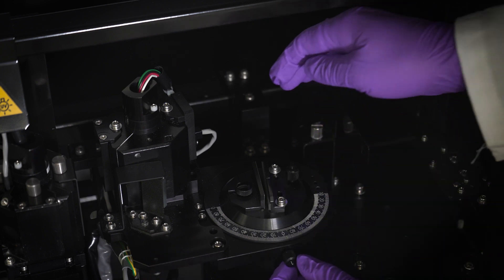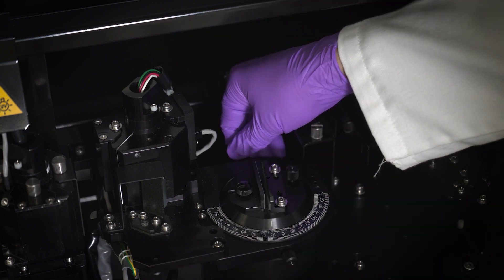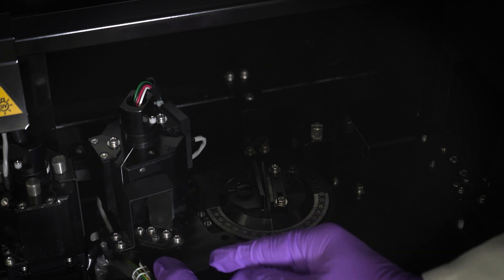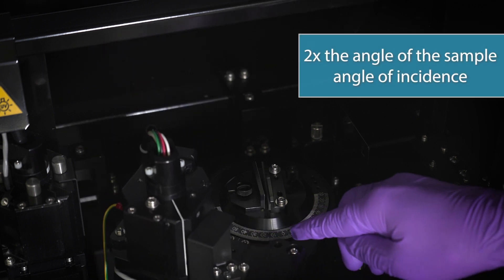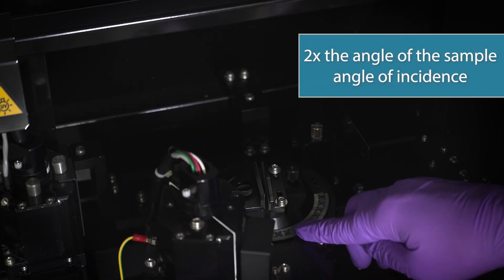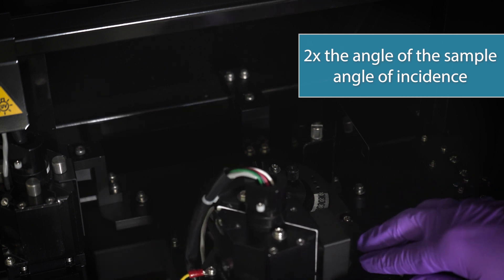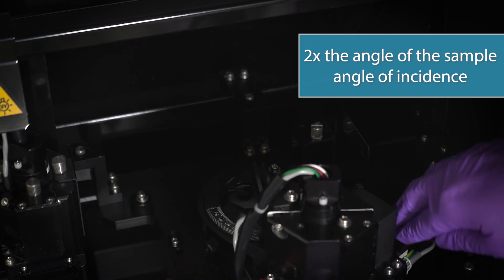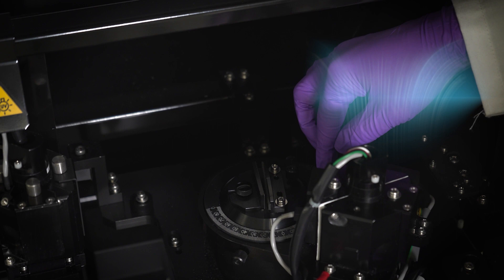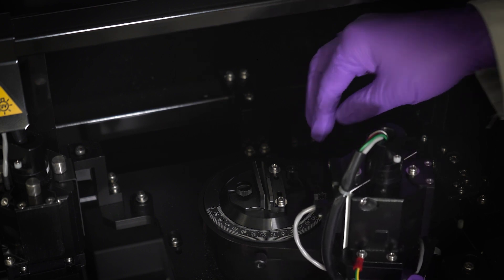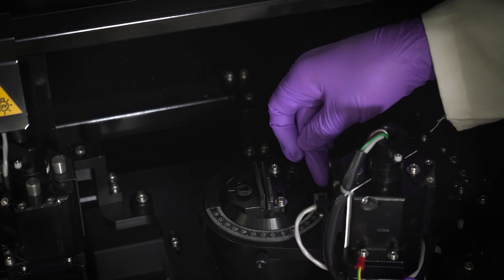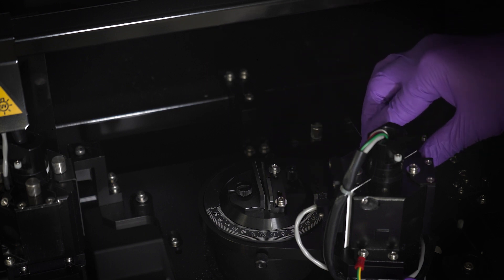Loosen the detector base set screw. Rotate the Integrating Sphere to twice the angle of the sample angle of incidence. For example, if the sample angle of incidence is 10 degrees, then the detector should be set at 20 degrees. Tighten the detector base set screw.